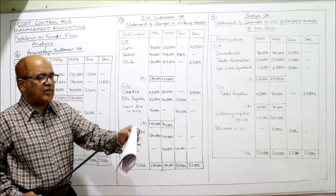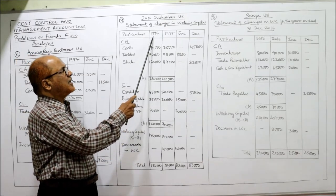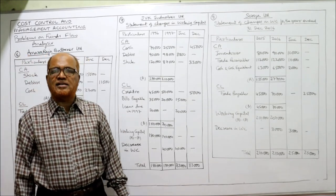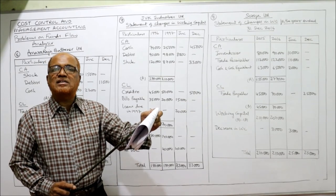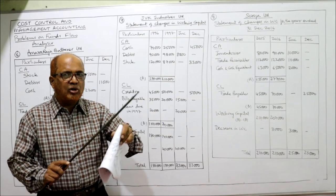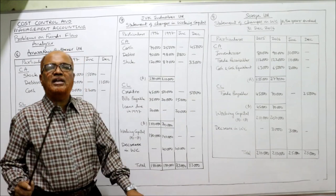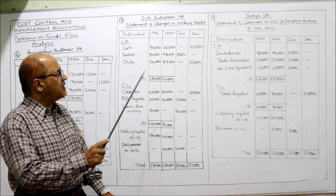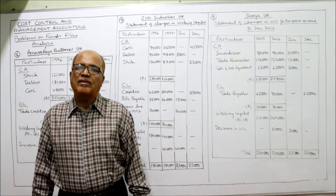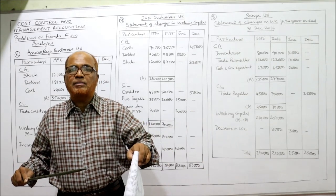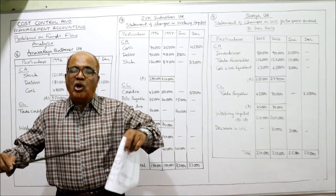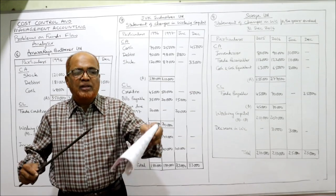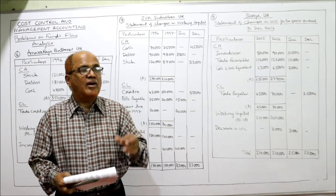In JVK Industries, goodwill is a fixed asset (intangible) — not concerned. Cash, debtors, and stock are current assets. Investments: nothing is specified as short-term or long-term. We assume investments are long-term investments and do not take them. In examination, you should write a note below stating that investments are assumed to be long-term. Land is a fixed asset. Preliminary expenses is a fictitious asset. So only cash, debtors, and stock are current assets.